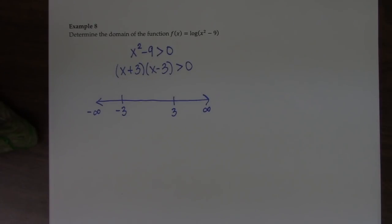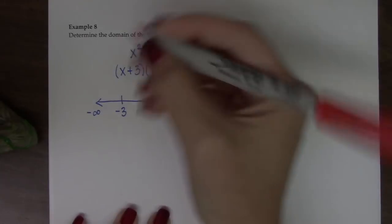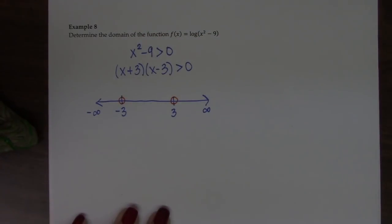And then what I'm going to do is I'm going to say, do I keep or throw those numbers out? And in this example, I'm going to throw them out because this is not allowed to equal 0. So that means this is not in the domain and this is not in the domain.